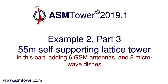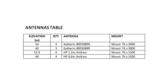We are going to define the panel antennas and the microwave dishes. The tower is equipped with three antennas of type Catherine 80010899 at the level of 54 metres, with one mount per antenna. The diameter of the mounting pipes is 76 millimetres and the length is 3000 millimetres. Another three panel antennas of the same type are located at the 40 metres level.